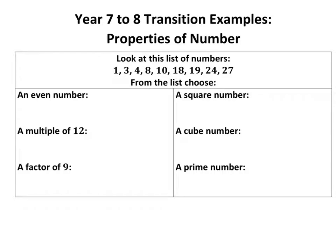We're looking at properties of number. Properties of number are things like even, odd, multiples, factors, squares, cubes, triangular numbers (which actually I haven't listed here), but it's all those sorts of things, and prime. There you go.